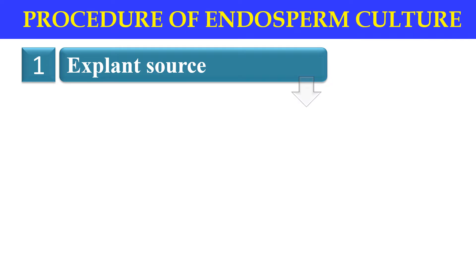Therefore, we excise the endosperm at the proper period of development. Normally, the endosperm of cereals undergoes certain changes from 12 days after pollination, making it able to respond — meaning 12 days after pollination the endosperm generally responds. The first step is the explant source: from where we can get the endosperm.